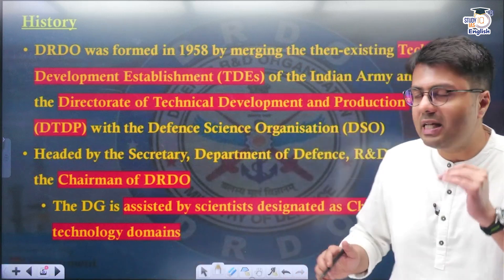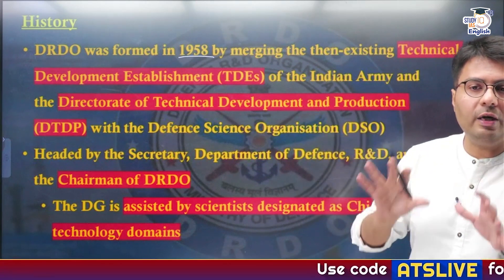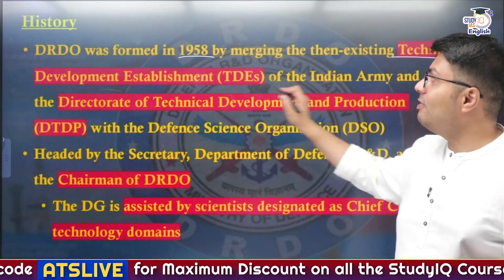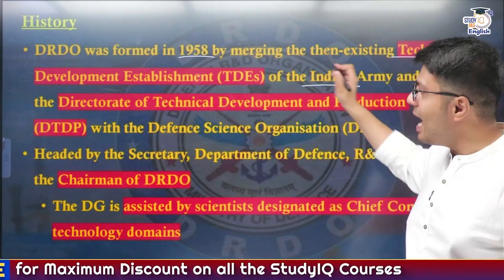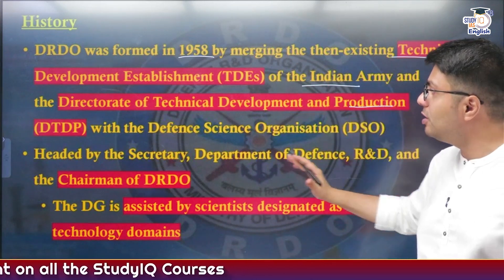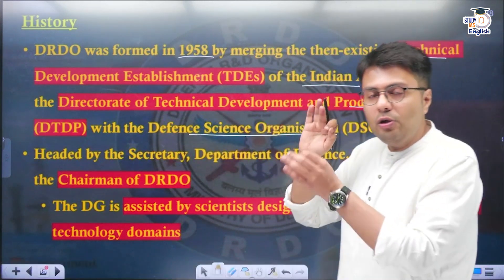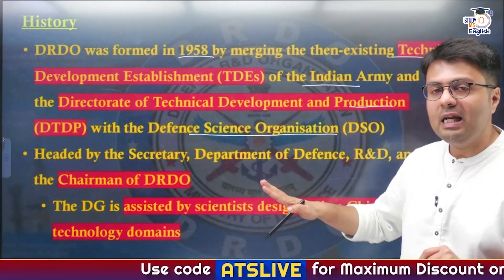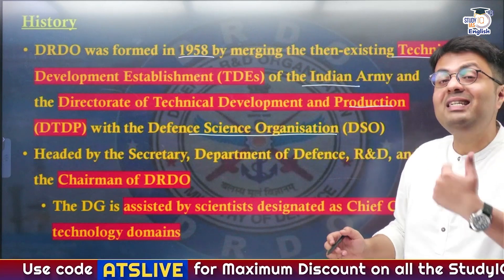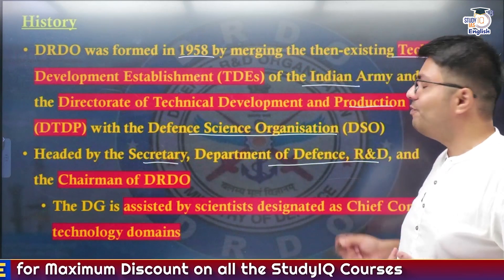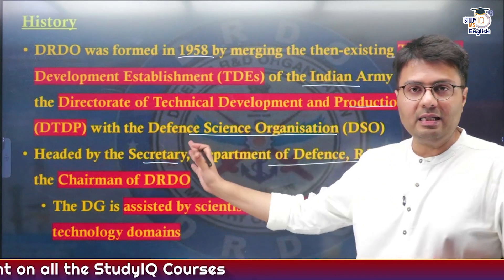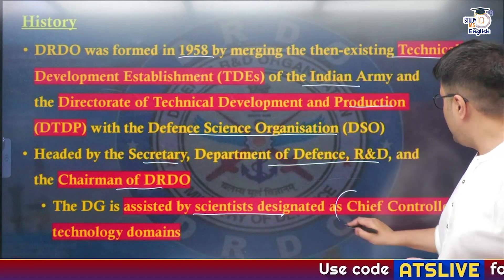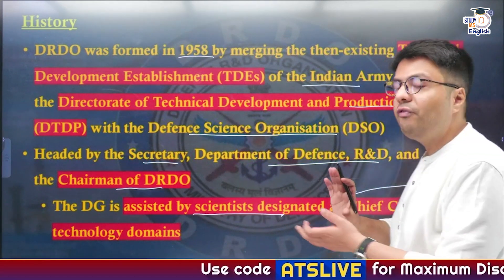The history of DRDO is that it was formed in 1958 by merging two existing departments responsible for R&D activities in India — the Technical Development Establishment of the Indian Army and the Directorate of Technical Development and Production of Defense Science Organizations. Currently, DRDO is headed by an official designated as the Secretary of the Department of Defense R&D, who is simultaneously designated as the Chairman of DRDO. The Chairman is assisted by scientists designated as Chief Controllers of the Technology Domains.